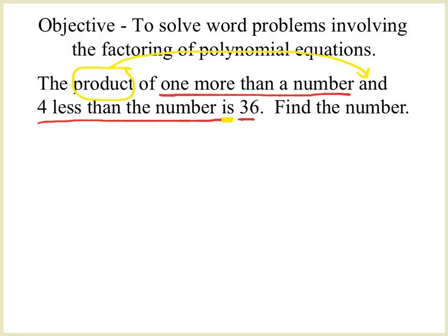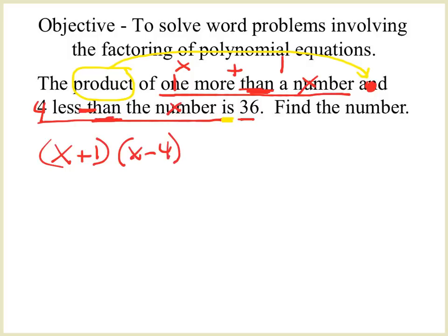For the number, we don't know what it is, so I'm going to call that X. When I have 'more than,' that means plus. But because I have the word 'than,' I have to crisscross my terms around the plus sign and put X plus 1. I sent my product over to the AND sign, so that means times. The number is X, but this time it's 'less than,' so because it says 'than,' I have to crisscross my terms to X minus 4. My IS means equals, and I have 36.